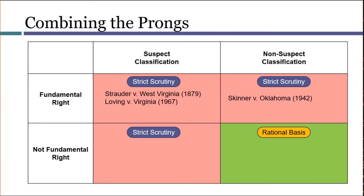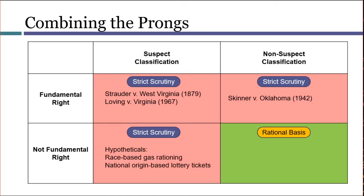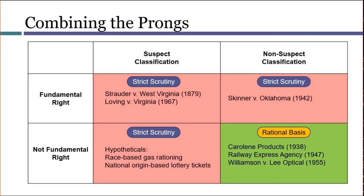We didn't see any famous cases involving a law that unequally distributed a non-fundamental right according to a suspect classification, but we can come up with some simple hypotheticals — for example, a law that imposed gas rationing on the basis of race, or limited the right to sell lottery tickets on the basis of national origin. Finally, cases involving ordinary business regulations will not trigger strict scrutiny. In Williamson, the right to sell prescription lenses is not a fundamental right, and placing opticians and optometrists in separate categories is not a suspect classification, so rational basis would be used.